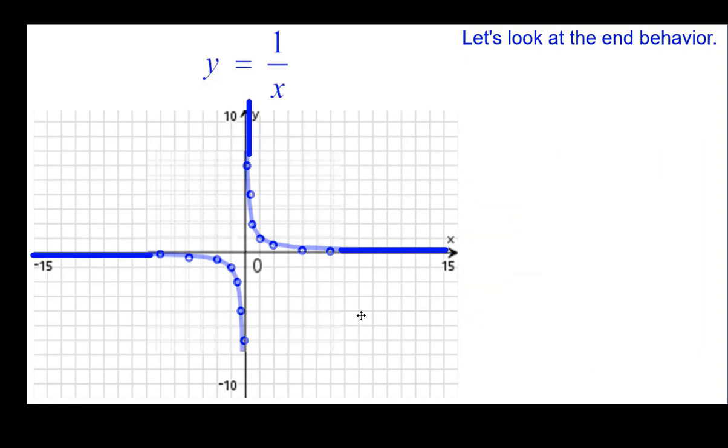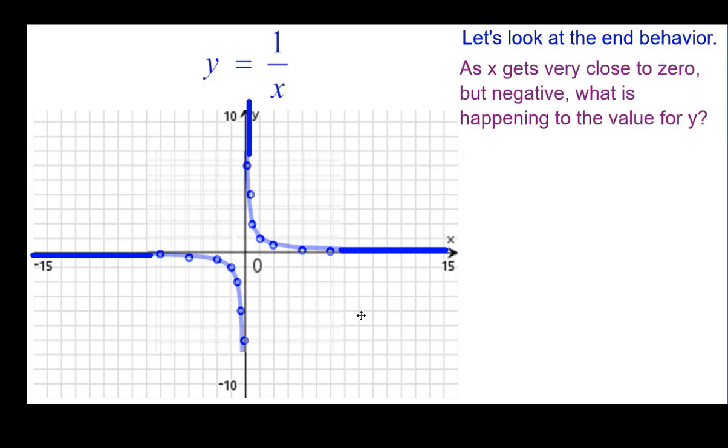And then on the other end, as x is very, very close to zero but negative coming from this side, what's happening to the value for y? Try again, negative a thousandth. Y is going to be negative a thousand.